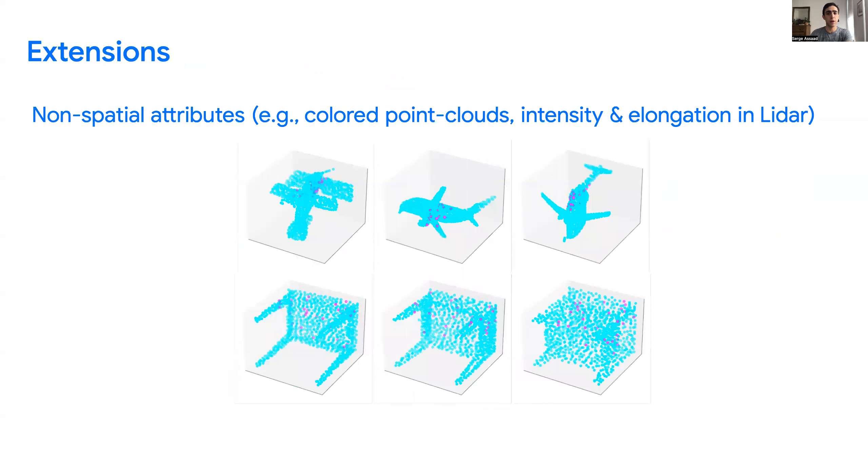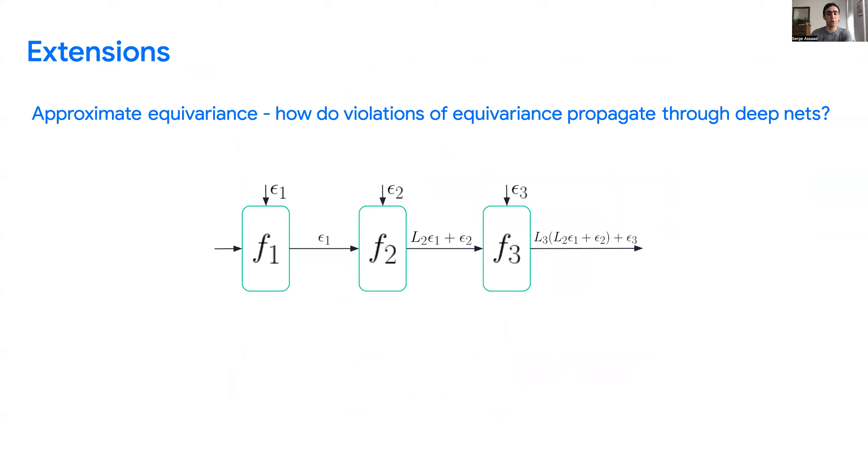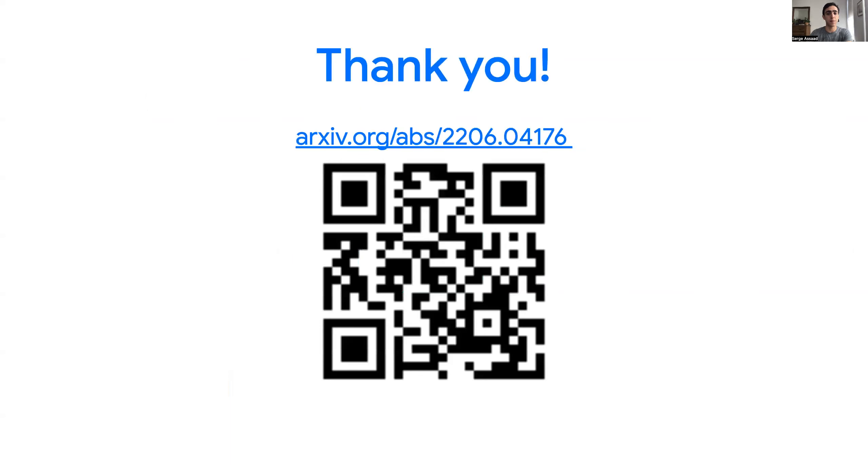Some extensions I'd like to mention: First, we discuss different ways to incorporate non-spatial attributes. We explore an equivariant latent query mechanism, which speeds up inference and training. We introduce a notion of approximate equivariance and characterize how violations propagate through deep networks. Here's the link to our paper, and thanks for listening.